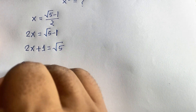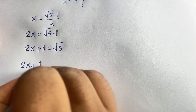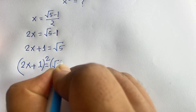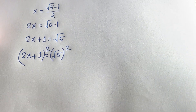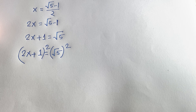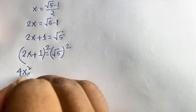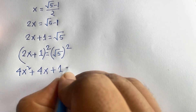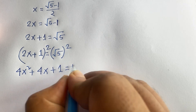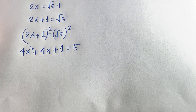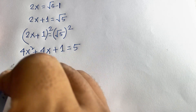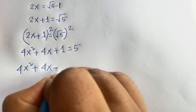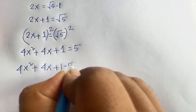At this moment I use both sides whole square, so it will be 2x plus 1, whole squared, is equal to square root 5, whole squared. Using the identity (a + b)² = a² + 2ab + b², the right side gives us 5, so we find 4x² + 4x + 1 is equal to 5.